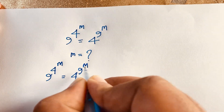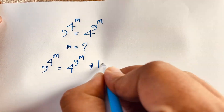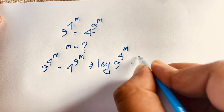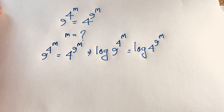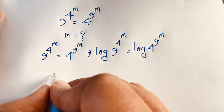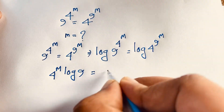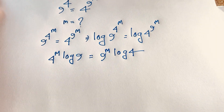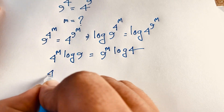Now I apply log to both sides: log of 9 to the power of 4 to the power m is equal to log of 4 to the power of 9 to the power m. According to logarithm rules, we can move the exponent in front, so it becomes: 4 to the power m times log 9 is equal to 9 to the power m times log 4.